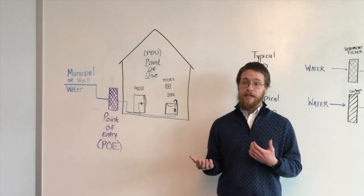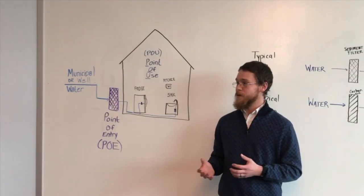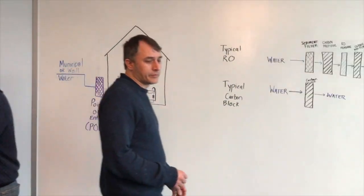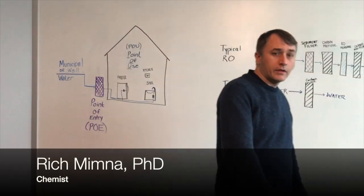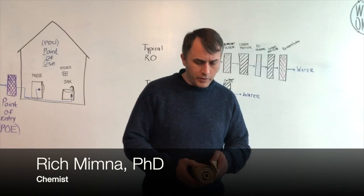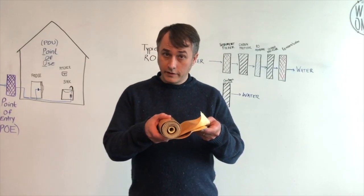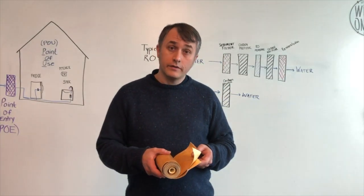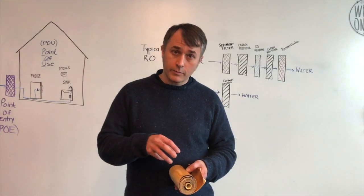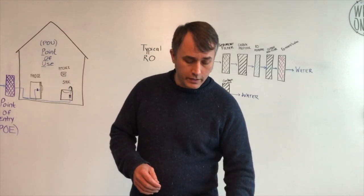To introduce that first topic — reverse osmosis — is Dr. Rich Minner. An RO system relies on a polymeric membrane, often wound into a spiral like you see in this example here. The device will use pressure to force water through microscopic holes in that membrane, thereby leaving contaminants behind.